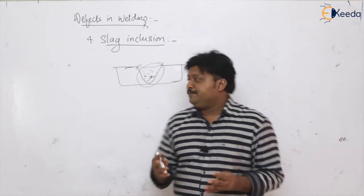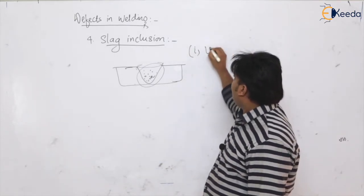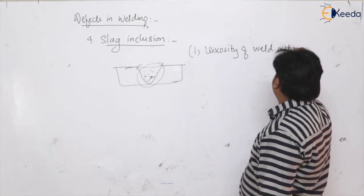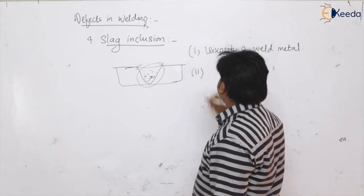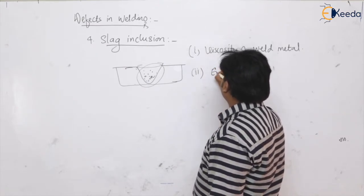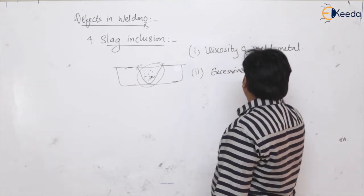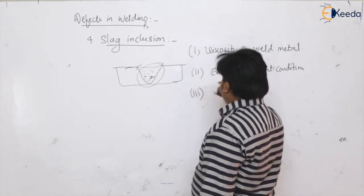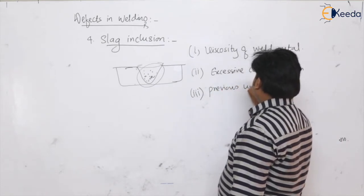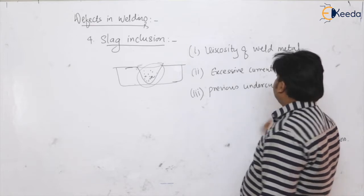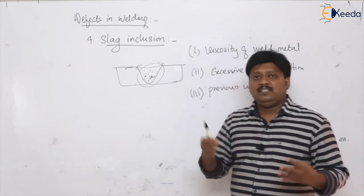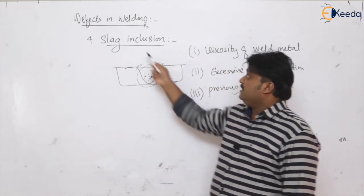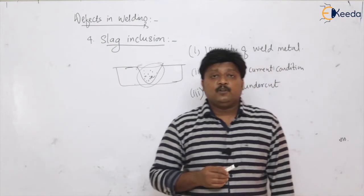The reasons responsible for slag inclusion are: viscosity of the weld metal, excessive current conditions, and previous undercut. For example, if we are using multiple passes and any undercut is present in the previous pass, that will encourage slag inclusion.